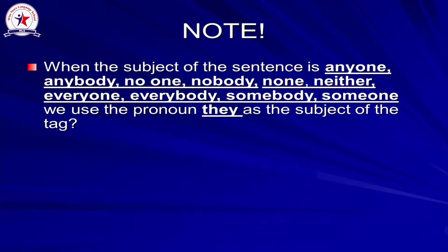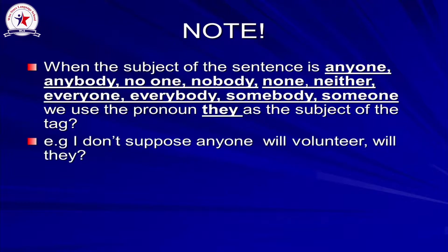When the subject of the sentence is anyone, anybody, no one, nobody, none, neither, everyone, everybody, somebody, or someone, we use the pronoun 'they' as the subject of the question tag. Examine: 'I don't suppose anyone will volunteer — will they?' The information I want to confirm is 'anyone will volunteer,' so I replace 'anyone' with 'they' and use the modal 'will' as the auxiliary.